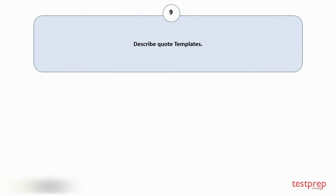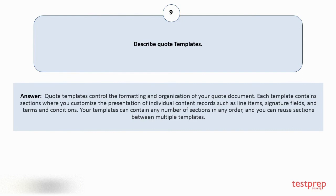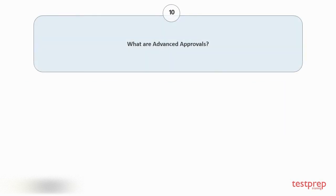Question number nine: Describe quote templates. Quote templates control the formatting and organization of your quote document. Each template contains sections where you customize the presentation of individual content records, such as line items, signature fields, and terms and conditions. Your templates can contain any number of sections in any order, and you can reuse sections between multiple templates.